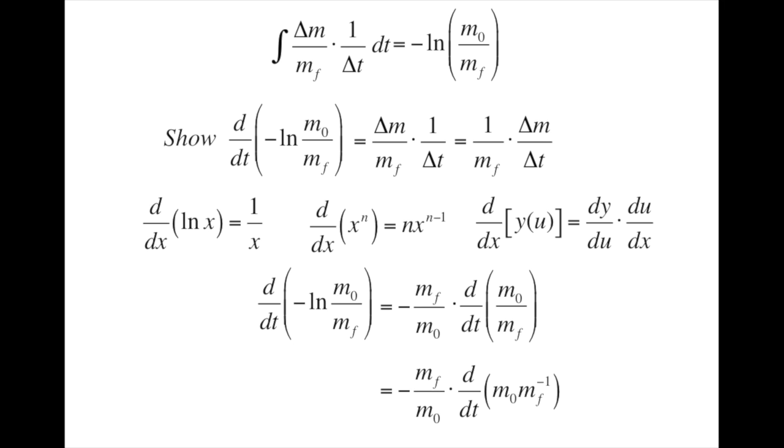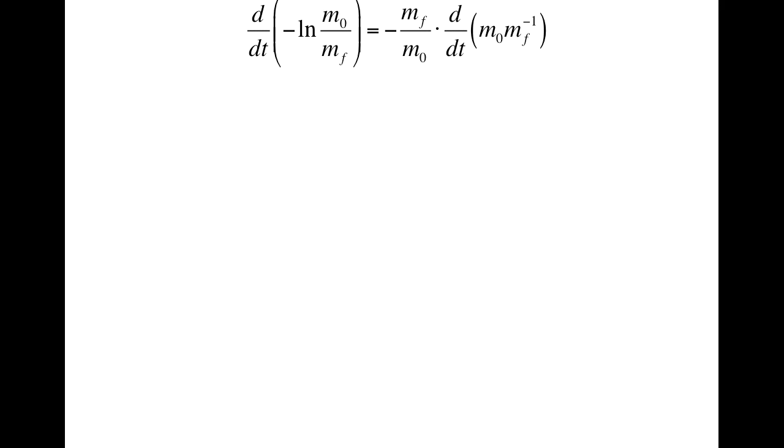Let's take this over to the next slide, and apply the power rule, treating the m0 as a constant. This brings the exponent of the negative down to the front and reduces the exponent by 1, getting negative 2. Again, by the chain rule, we still have to multiply by the derivative of mf with respect to t. Combining the terms ahead of the derivative simply gets 1 over mf.